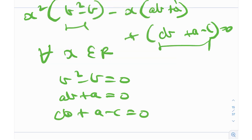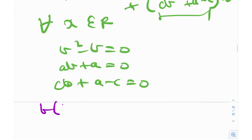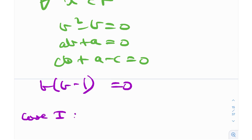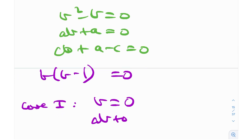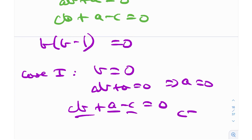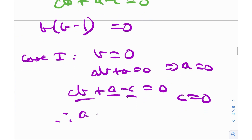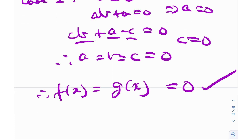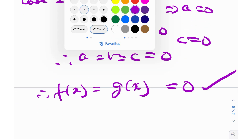From b squared minus b equals 0, we get b(b minus 1) equals 0, giving two cases. Case 1: b equals 0. Then ab plus a equals 0 implies a equals 0. Then cb plus a minus c equals 0 with a equals 0 and b equals 0 implies c equals 0. Therefore a equals b equals c equals 0, giving f(x) equals 0 and g(x) equals 0. This is a valid solution that satisfies the functional equation.